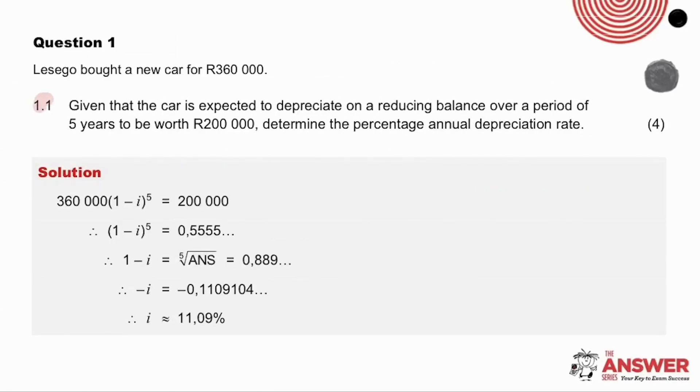Let's look first at the solution to 1.1. The words used in the story and the information given is where we will find what we need to do. So let's go and see what we have been given. We've been told that Lesego bought a new car for R360,000. In other words, the car's original or present value is this R360,000. It also says that the car depreciates on a reducing balance and will be worth R200,000 in five years, so therefore, we need to use the compound decrease formula with the reduced amount A being R200,000 and N five years. What the question is asking us to find is I. Did you get 11.09% for I?